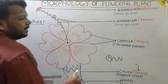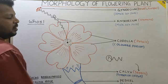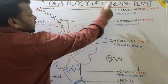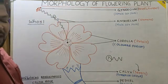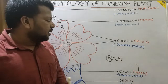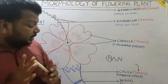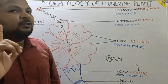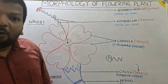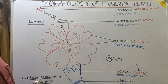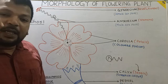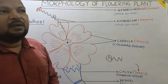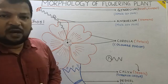Calyx is the outermost whorl, Corolla is the second, Androecium is the third, and Gynoecium is the innermost whorl. A flower that possesses all four whorls — Calyx, Corolla, Androecium, and Gynoecium — is called a complete flower. China rose (Hibiscus rosa-sinensis) is a complete flower. In some other flowers, some parts may be absent, and those are called incomplete flowers.